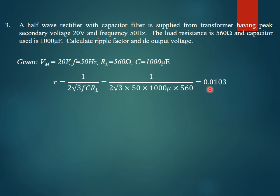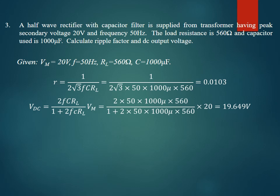The DC output voltage is determined using VDC = (2·f·C·RL · Vm) / (1 + 2·f·C·RL), and substitution gives VDC = 19.649 volts. This is close to the peak voltage of 20 volts, demonstrating that with a capacitive filter, the DC voltage is near the input peak and the ripple factor is very low. You can also solve a similar problem replacing the half-wave rectifier with a full-wave rectifier to see how the outputs differ.